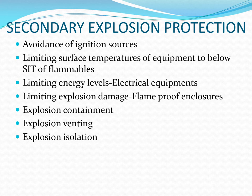Secondary explosion protection is used when releases cannot be eliminated completely, and inerting in working areas is not always possible. When primary protective measures alone are not sufficient, secondary measures are necessary for safe operation. These include avoiding ignition sources, limiting surface temperatures of equipment to below the self-ignition temperature (SIT) of flammables, limiting energy levels through intrinsic safety in electrical equipment, and limiting explosion damage through flameproof enclosures, explosion containment, explosion venting, and explosion isolation.